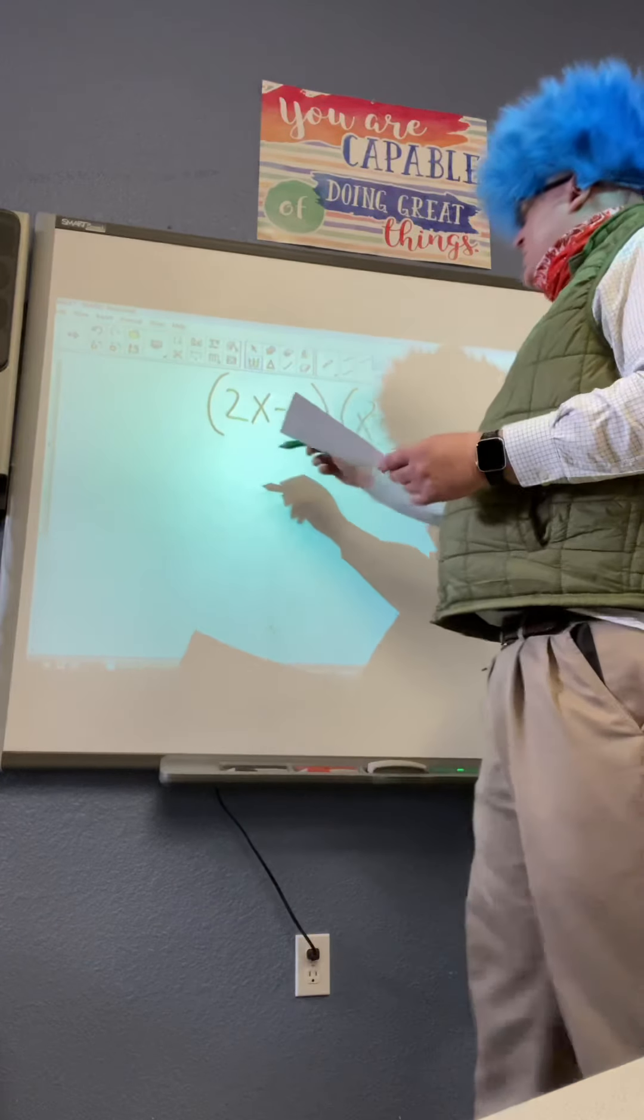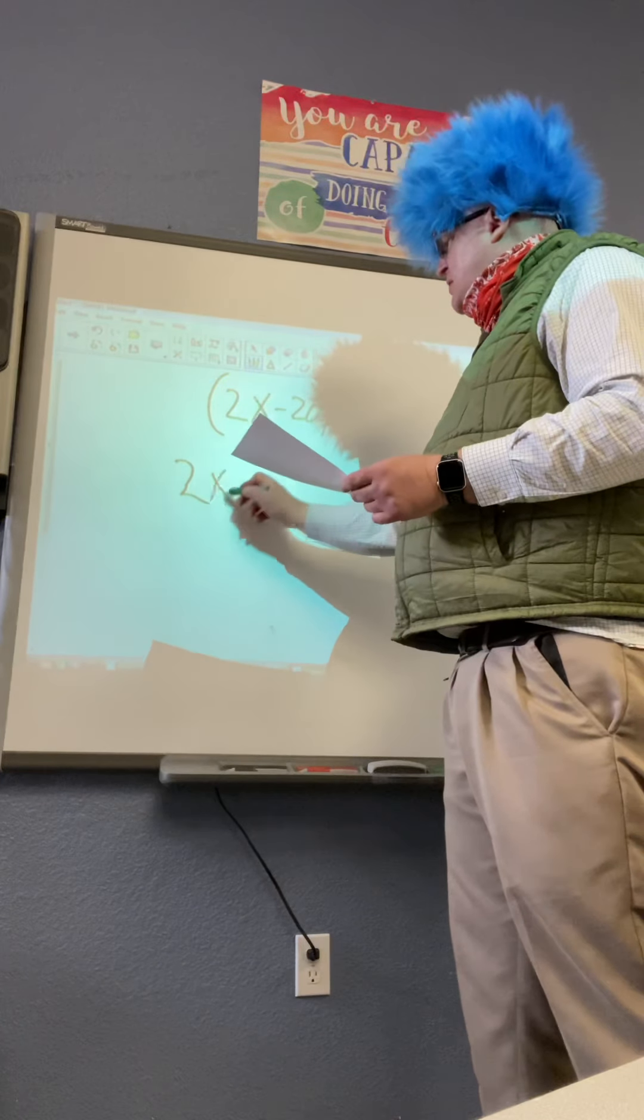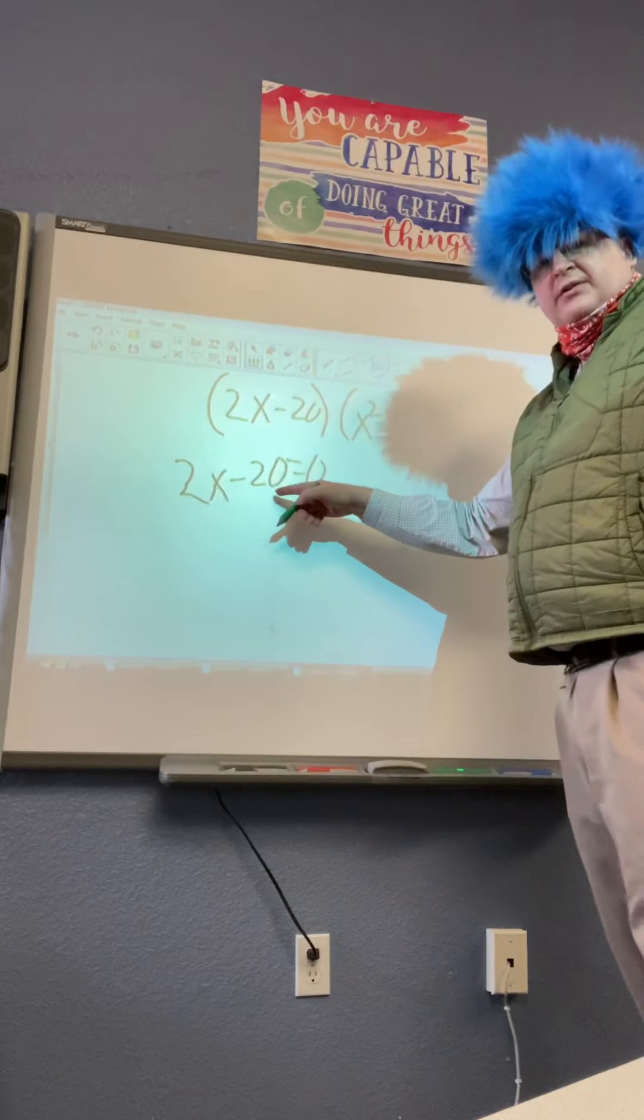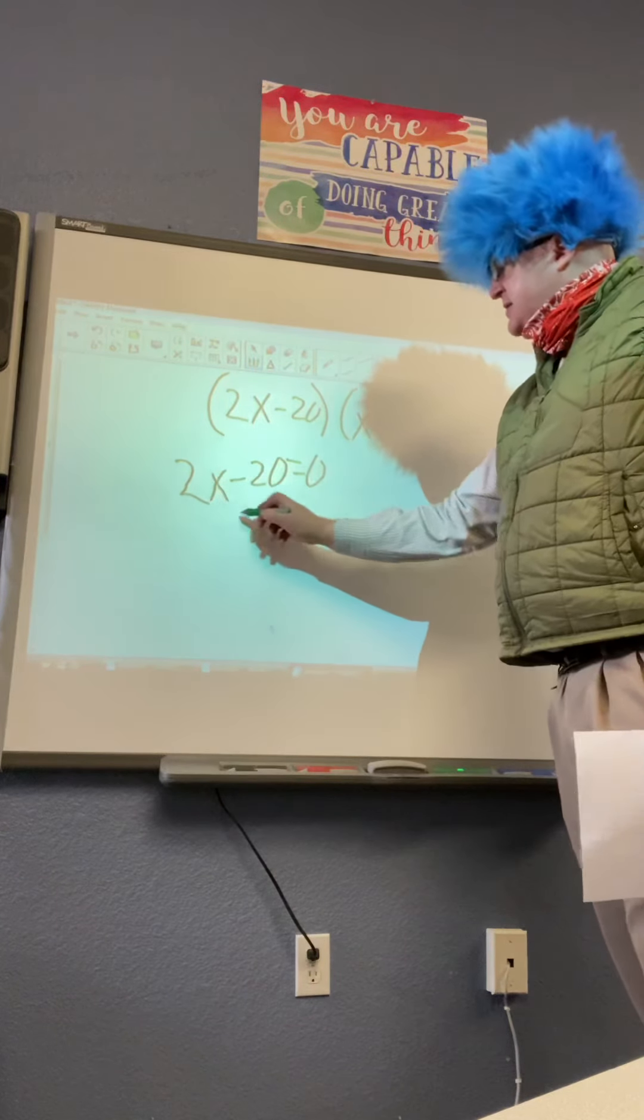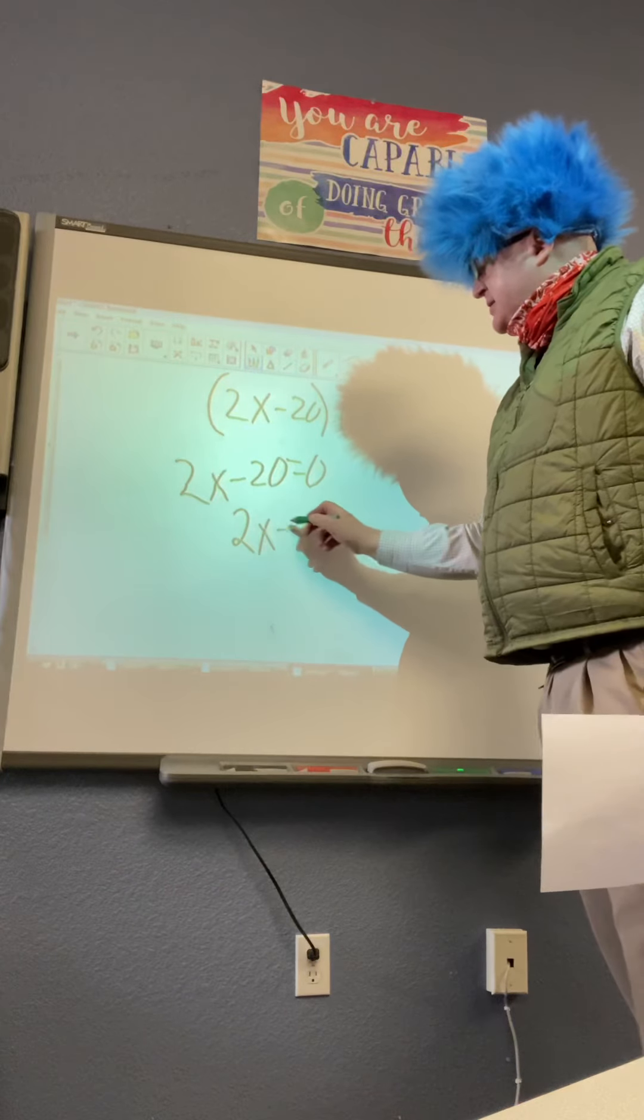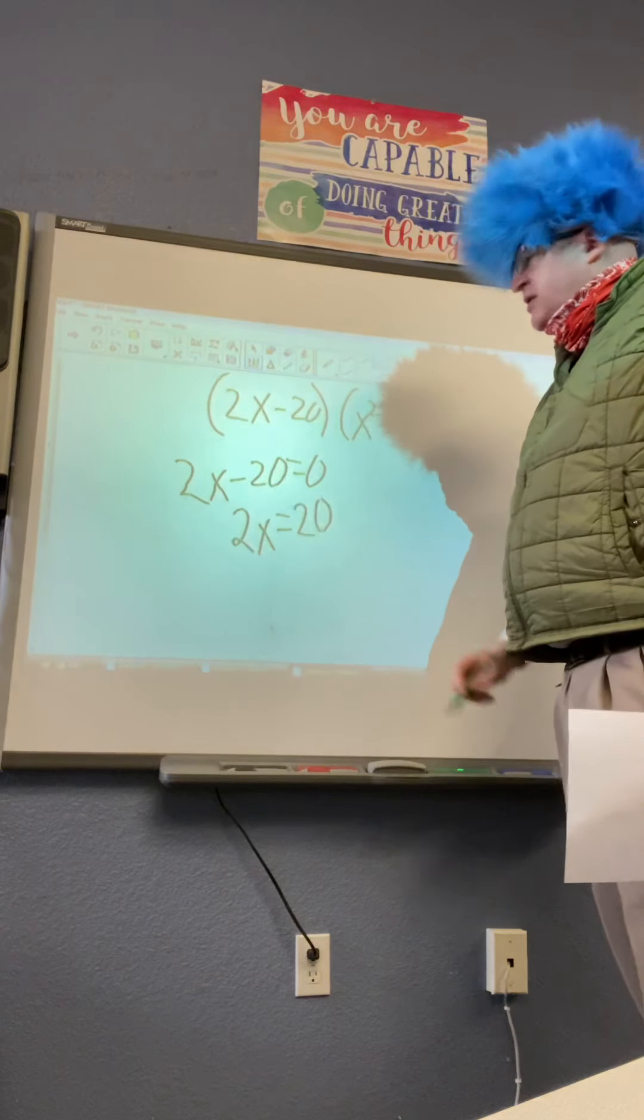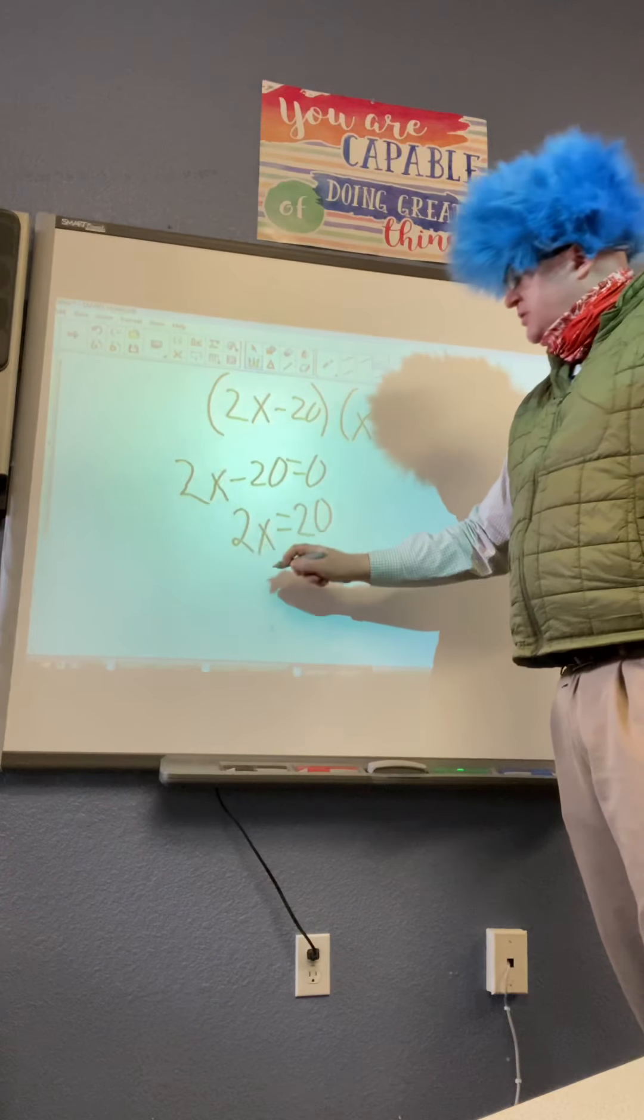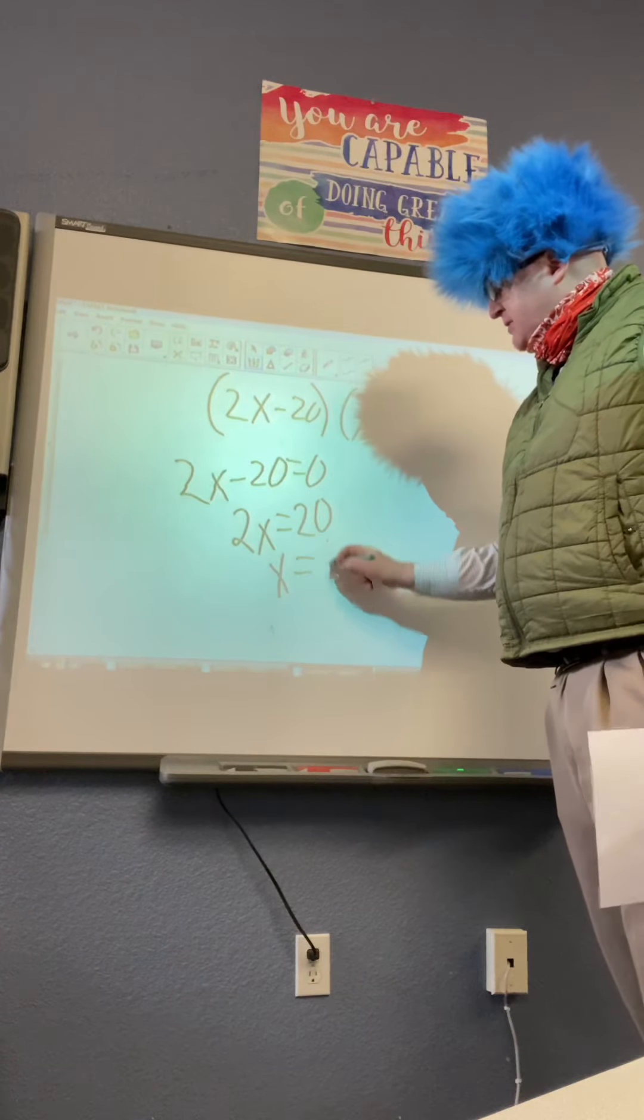All right, so we do the first one. To get rid of the minus 20, we add 20 to both sides. So we have 2x equals 20. Our next step is divide everything by 2. So we have x equals 10.